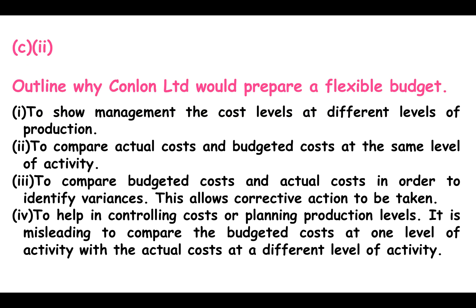Part two: outline why Condon Limited would prepare a flexible budget. Number one, to show management the cost levels at different levels of production. Number two, to compare actual costs and budgeted costs at the same level of activity. Number three, to compare budgeted costs and actual costs in order to identify variances — this allows corrective action to be taken. Number four, to help in controlling costs or planning production levels. It is misleading to compare the budgeted costs at one level of activity with the actual costs at a different level of activity.